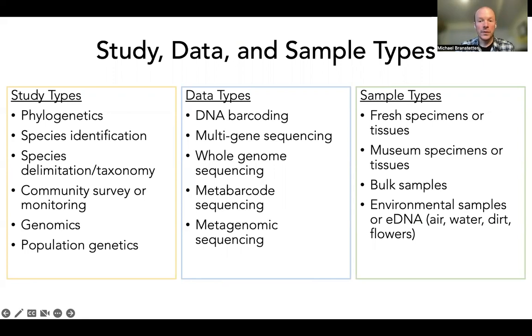Thinking about the goals of the native bee monitoring community, species identification and taxonomy are probably two of the most important study types, and DNA barcoding of fresh specimens will likely be one of the more common approaches.